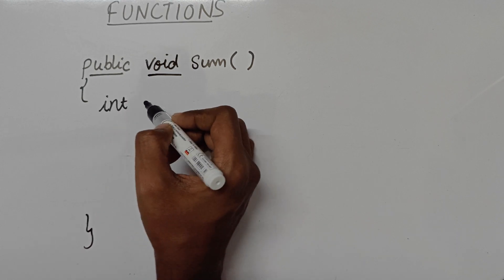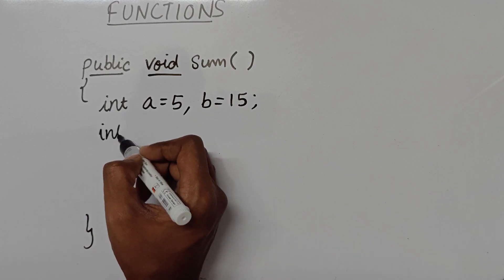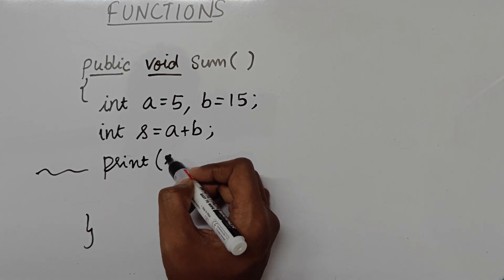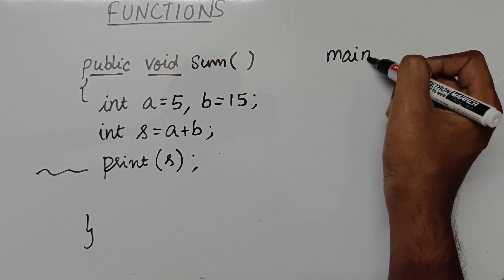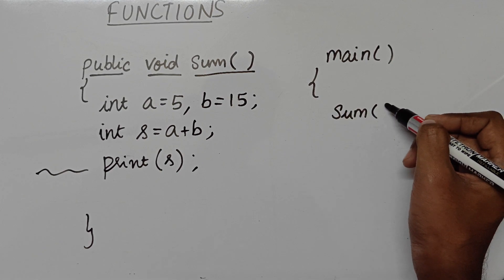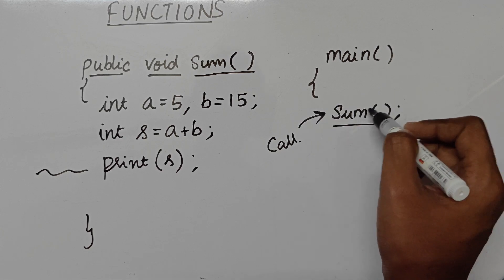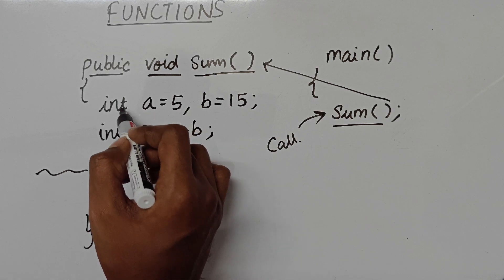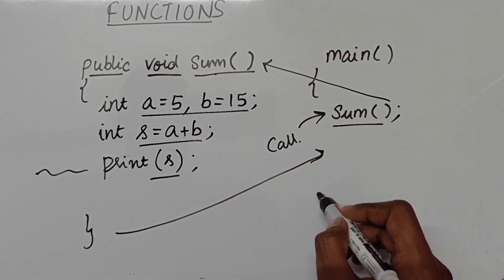Inside this function, I will declare two numbers: `a` as 5 and `b` as 15. Then I'm going to add them — I'll have one more variable, I'll call it `s` equal to `a + b`. And then I'm going to print it using `System.out.println(s)`. So whenever you call this function from your program — let's say this is your main — in this main you just call this function by writing the name of the function with opening and closing brackets and a semicolon. This is a function call. The control goes to this function, it executes, creates the two variables, adds them, prints the result, and then control comes back to the next line of the program.